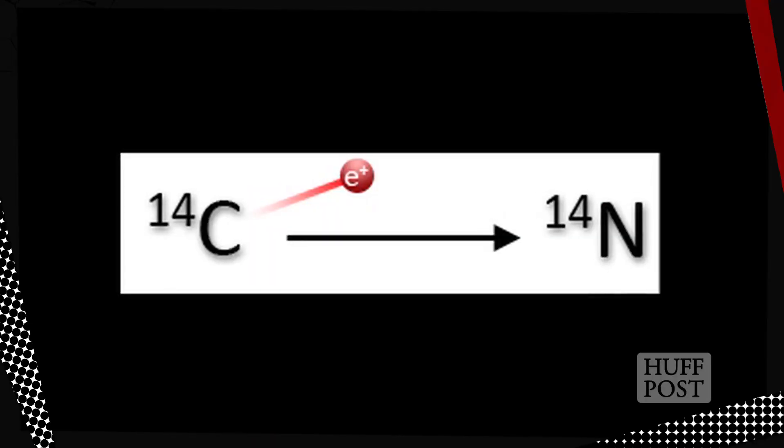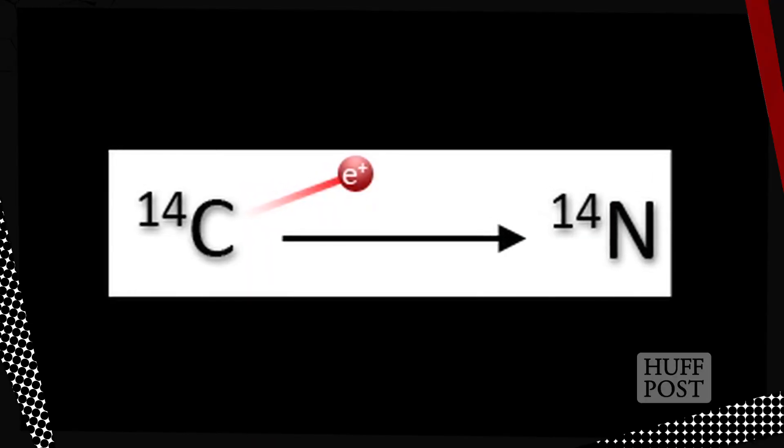Because there's a consistent quantity of C-14 in the atmosphere, there's a constant corresponding quantity of it in the bodies of all living things, at least while they're still alive. C-14 is radioactive — that doesn't mean it's dangerous, only that it's unstable. Over time, it decays back into nitrogen.